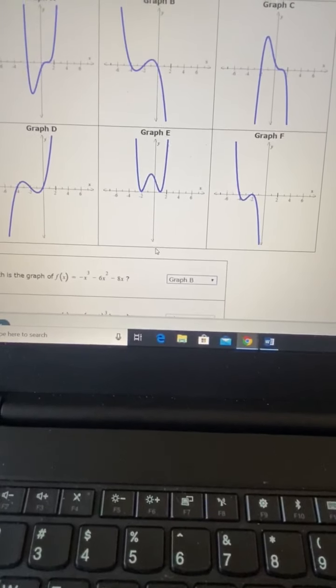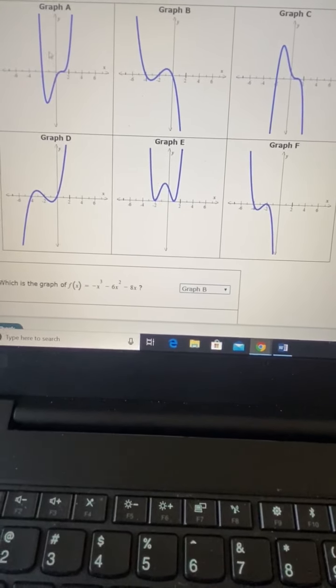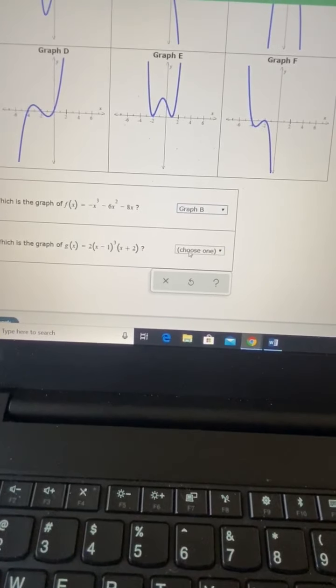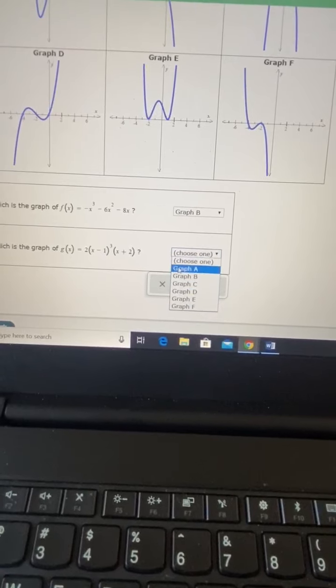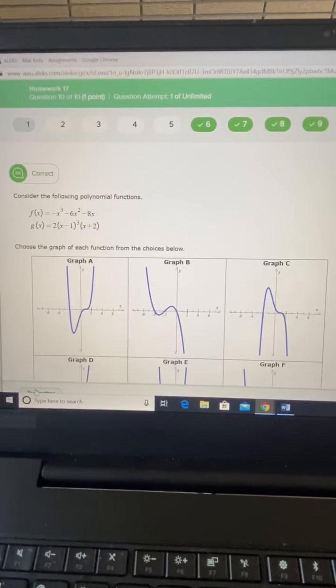So we want to take a look here which one of these looks like it's at negative 4 when x is 0. And it's more likely graph a. So we'll choose graph a and then we hit check. And there we go.